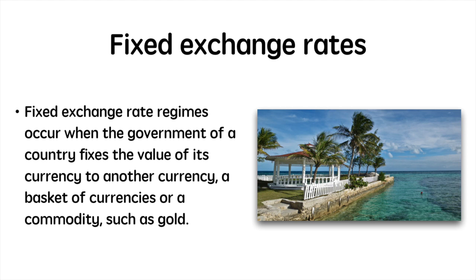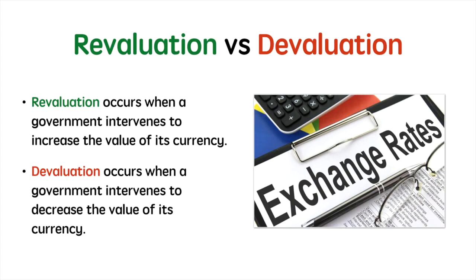When discussing the revaluation or devaluation of currencies, we are generally referring to fixed exchange rate regimes. Revaluation occurs when a government intervenes to increase the value of its currency relative to another. If a country sets its exchange rate to 2 to 1 against the dollar and then allows it to increase to 1 to 1, then we say that it has revalued.